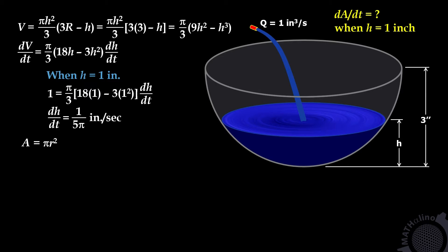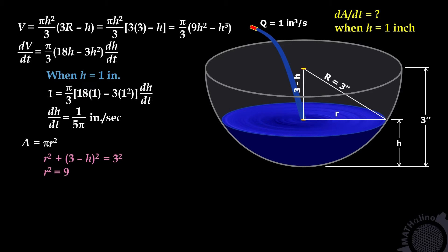The area of the water surface is pi r squared, where small r is the radius of the water surface. From this triangle, using the Pythagorean theorem: r squared plus (3 minus h) squared equals 3 squared. Solving for r squared: r squared equals 9 minus (3 minus h) squared, which expands to give r squared equals 6h minus h squared. Substituting into the area equation: A equals pi times (6h minus h squared).